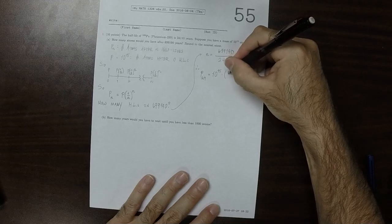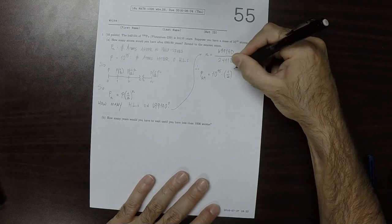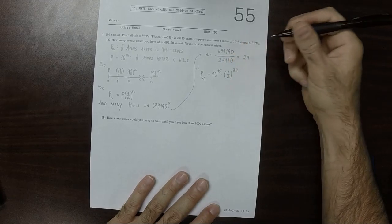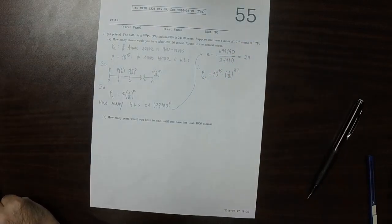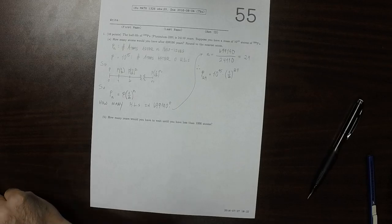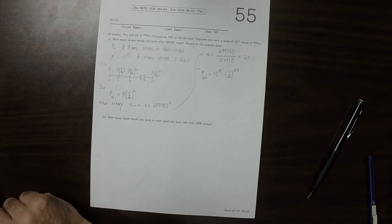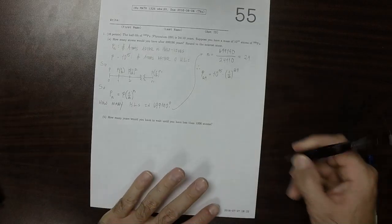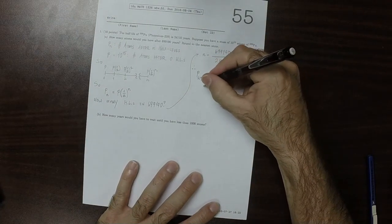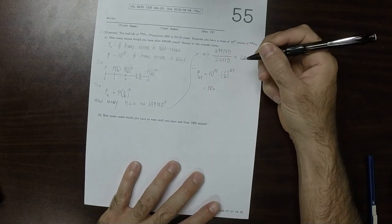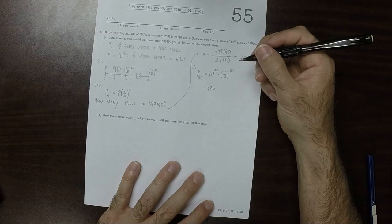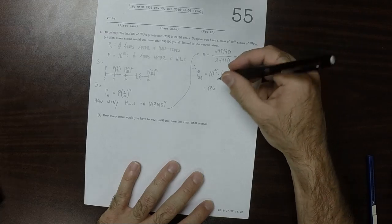And therefore the answer is P29, which would be 10^15 multiplied by half to 29. So typing that into the machine.